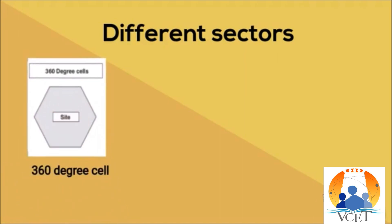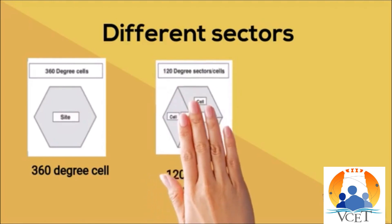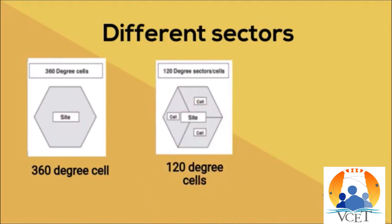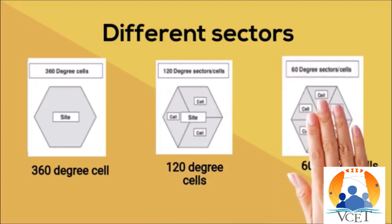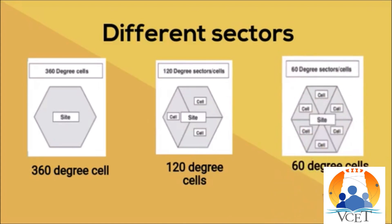Different sectors of a cell: a 360-degree cell is a standard cell with no sectors. Second, a cell divided into 3 regions each of 120 degrees. Third, a cell divided into 6 regions each of 60 degrees.